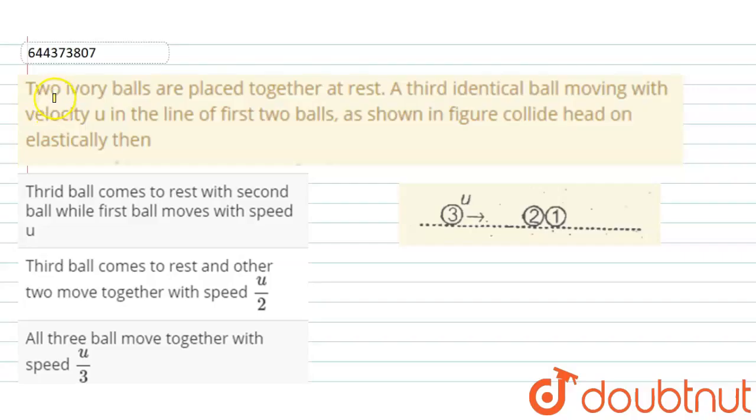Hello everyone, let's start our question. So here's the question: two ivory balls are placed together at rest, a third identical ball is moving with velocity u in the line of the first two balls as shown in the figure, collide head on elastically. Then we have to find the correct statement.